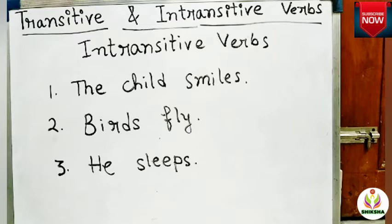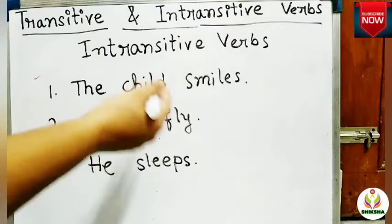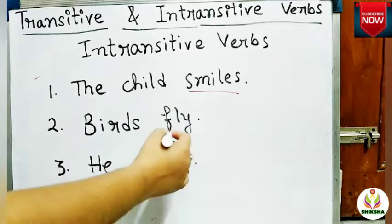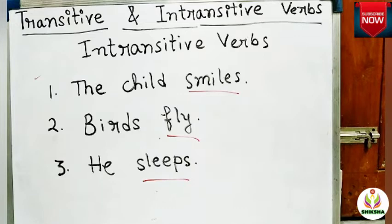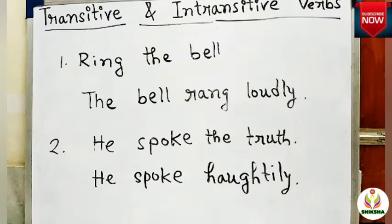Now let's see what intransitive verbs are. Look at these examples: 'The child smiles,' 'Birds fly,' 'He sleeps.' These sentences are quite meaningful on their own. The verbs smiles, fly, and sleeps do not require any other object to complete their sense. These are called intransitive verbs — verbs that do not require any object to complete the sense. They make good sense by themselves.